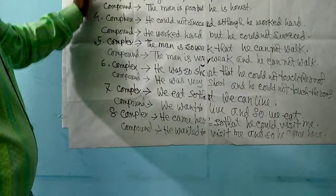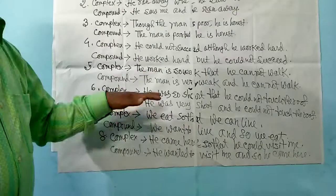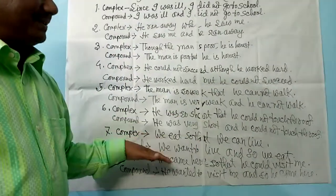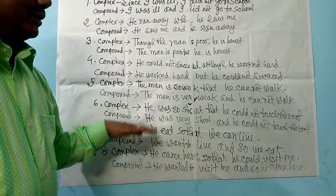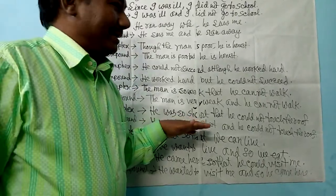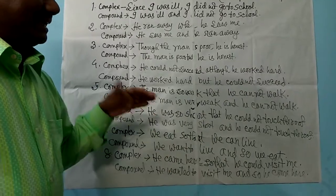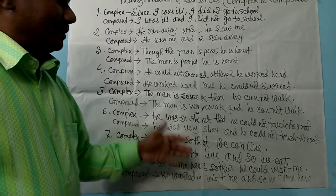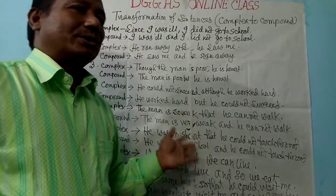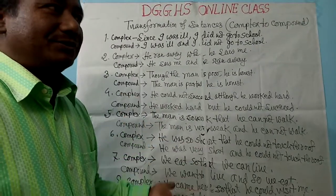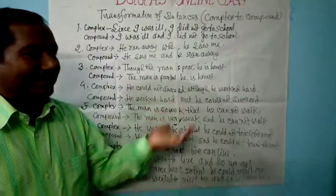So students, I think this is clear to you. If 'so that' is used in a complex sentence and you have to make it compound, we will connect the clauses with 'and'. The clause after 'so that' will come first, and in place of 'can', 'could', 'may', or 'might' we will use 'want to', 'desire to', 'wanted to', or 'desired to'.